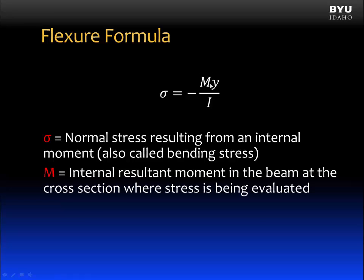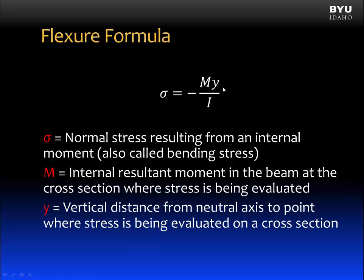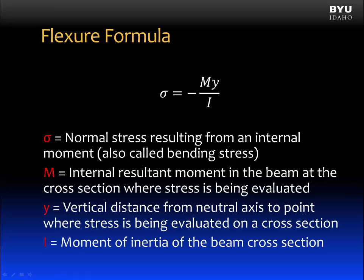The next term is m. M is the internal resultant moment in the beam at the cross-section where stress is being evaluated. The next variable is y. Y is a dimension, typically in inches or meters, and it is the vertical distance from the neutral axis to a point where stress is being evaluated on a cross-section. The last term is i. I is the moment of inertia of the beam cross-section. Now let's discuss each of these variables in more detail, and also discuss why this negative sign appears in the equation.